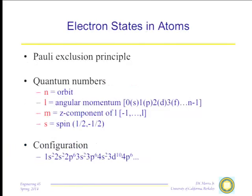There are some important properties of materials which can actually be inferred from the nature of the bonding itself. You don't really need to know much more than what kind of bonding is holding the atoms together in order to determine some of their properties. We begin with the atom. You know that atoms consist of nuclei and electrons. The electrons obey the Pauli exclusion principle, so I can only have one electron in each state.